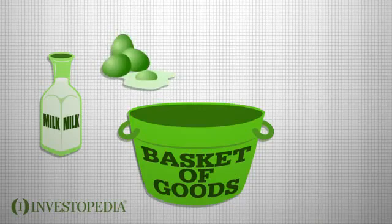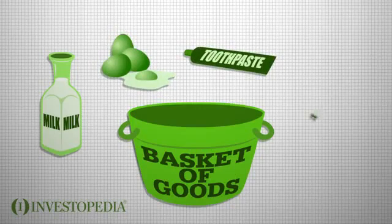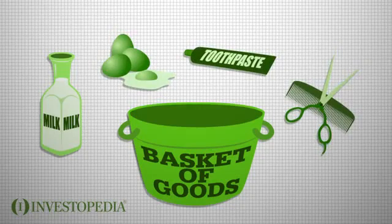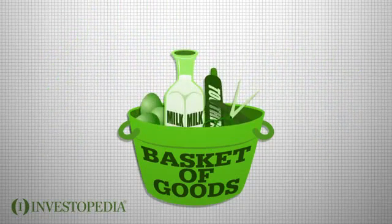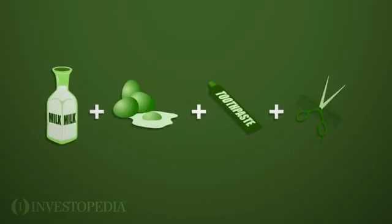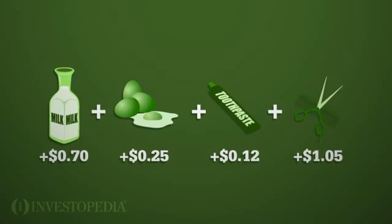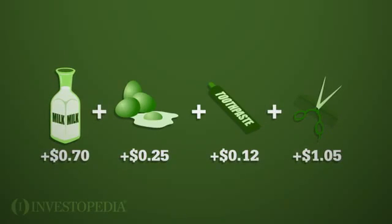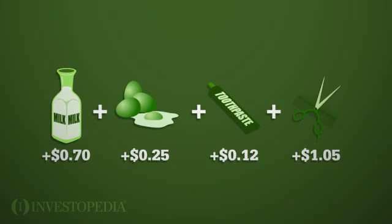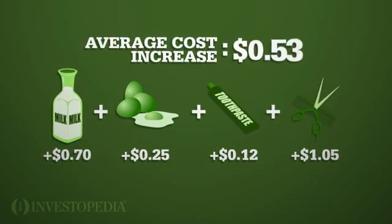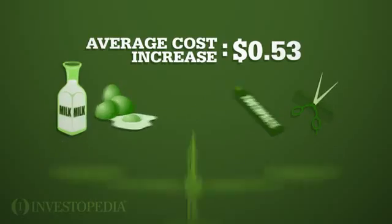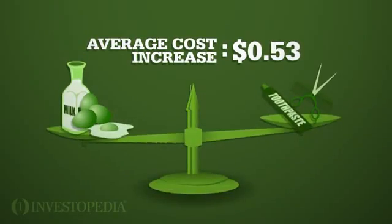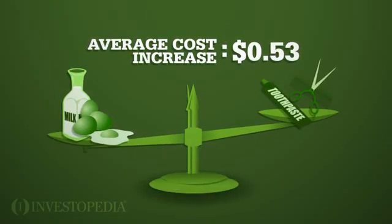The price of your milk, eggs, toothpaste, and haircut are all captured in the CPI. The CPI is calculated by taking price changes for each item in the preset basket of goods and averaging them, with the goods being weighted according to their importance.